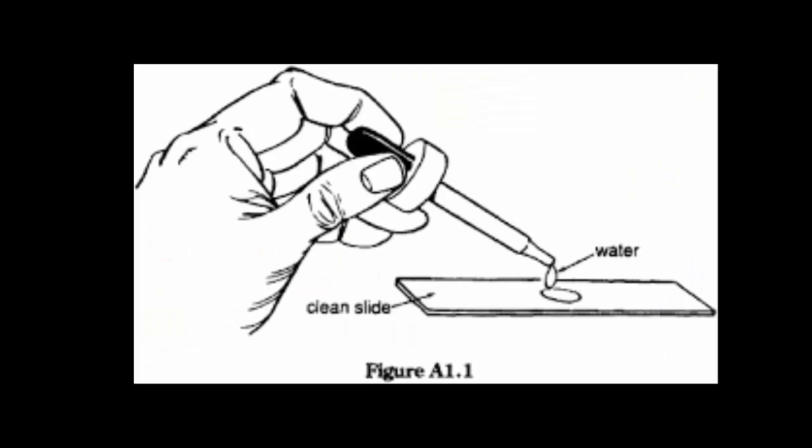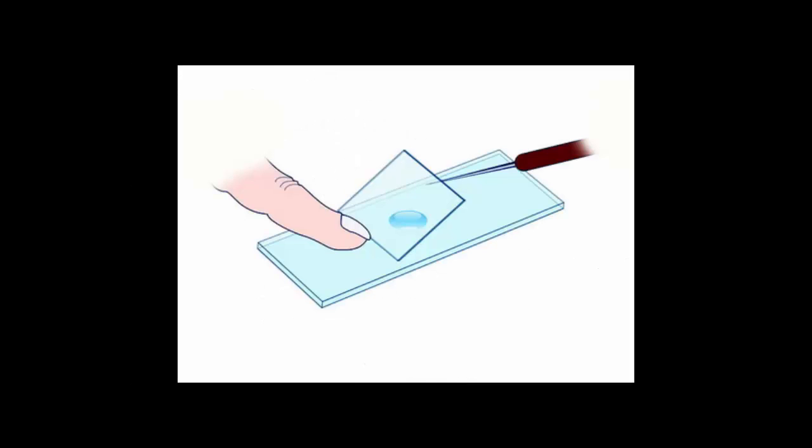Wet mount slides: slides that you will make fresh in the lab. A specimen and usually a drop of water are placed on the slide along with a cover slip, or cover glass.